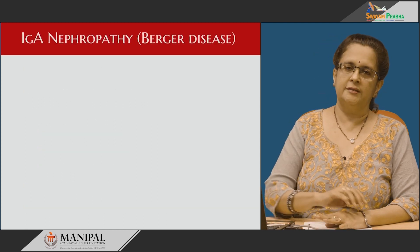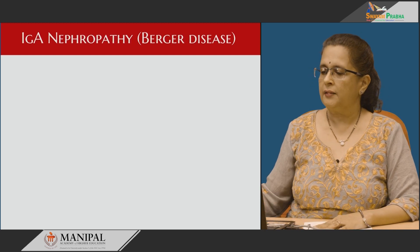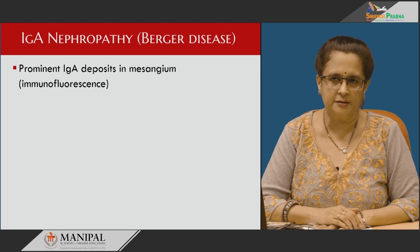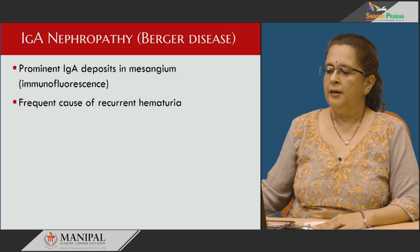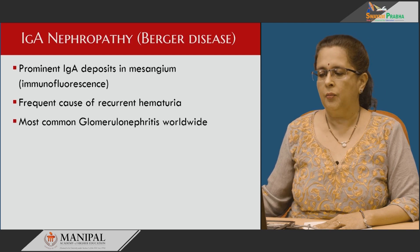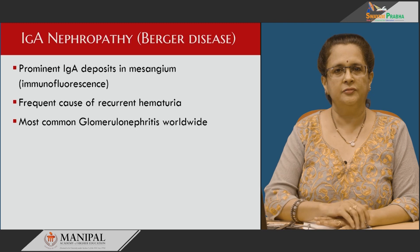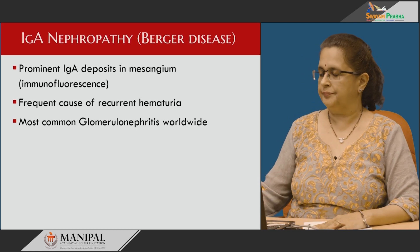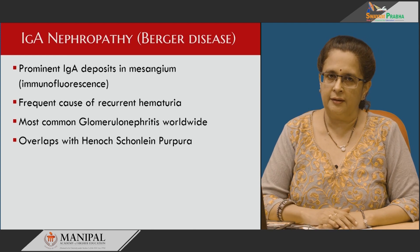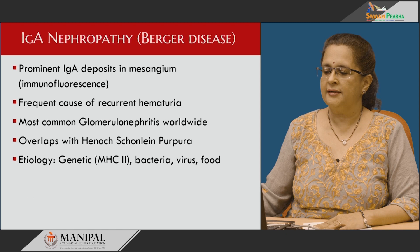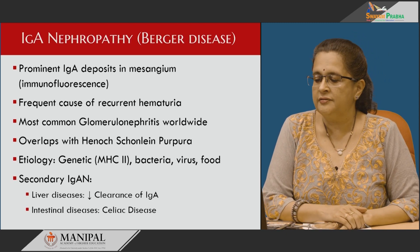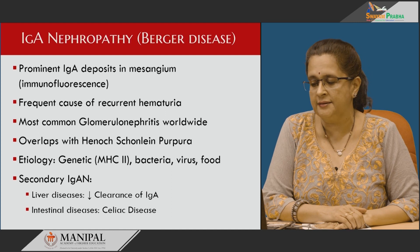IgA nephropathy is also known as Berger's disease. It is characterized by prominent IgA deposits in the mesangium on immunofluorescence and is a frequent cause of recurrent hematuria in patients. It is thought to be the most common glomerulonephritis worldwide. It overlaps in children especially with a condition known as Henoch-Schönlein purpura, and secondary IgA nephropathy has also been detected in patients with liver diseases as well as intestinal disease.